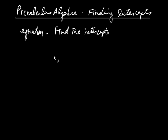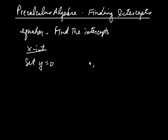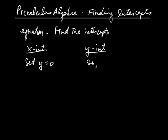When you go to find intercepts, remember that to find the x-intercept — or intercepts, since there might be more than one — you set y equal to zero and solve the resulting equation. And to find the y-intercept, usually there's only one if you're dealing with a function, but sometimes there can be more. When looking for y-intercepts, you set x equal to zero and solve the resulting equation.